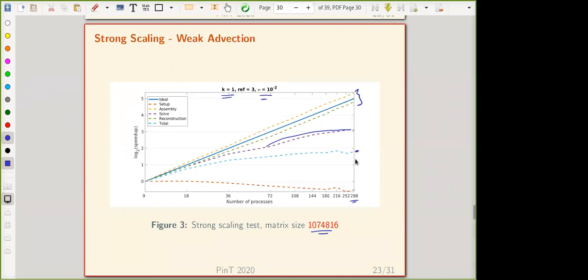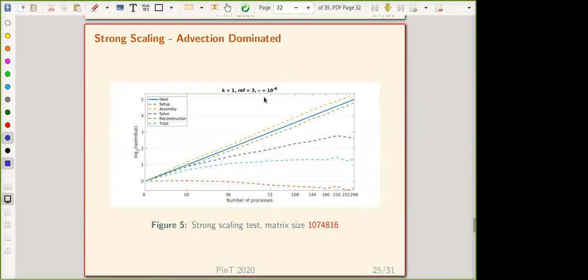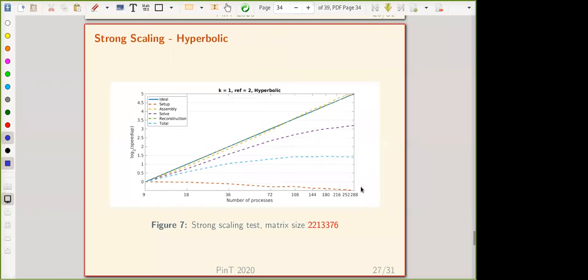By going to cubic polynomials for the same viscosity parameter, everything is around the ideal line except for setup. Same is observed for viscosity 10 to the minus 6, order one: solve plateaued off, total time is suffering because of setup time. If we do polynomial order three times the minus 6, everything is around the ideal line except for setup.